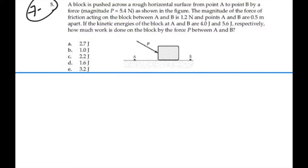The magnitude of the force of the friction acting on the block between A and B is 1.2 newtons, and points A and B are 0.5 meters apart. If the kinetic energies of the block at A and B are 4 joules and 5.6 joules respectively, how much work is done on the block by the force P between A and B?